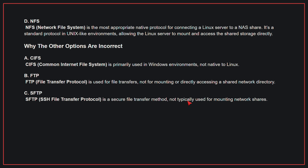Why the other options are incorrect: A, CIFS — CIFS is primarily used in Windows environments, not native to Linux. B, FTP — FTP is used for file transfers, not for mounting or directly accessing a shared network directory. C, SFTP — SFTP is a secure file transfer method, not typically used for mounting network shares. Therefore, the correct answer is D: NFS.